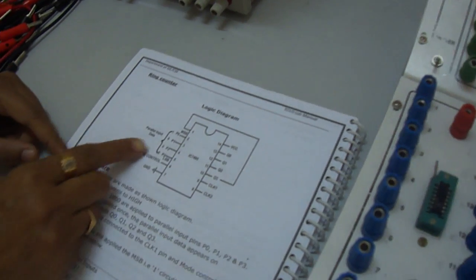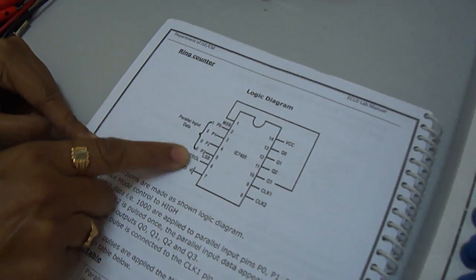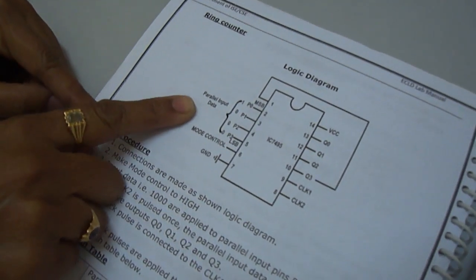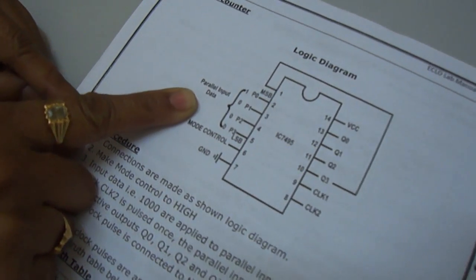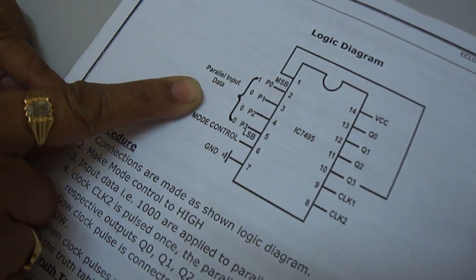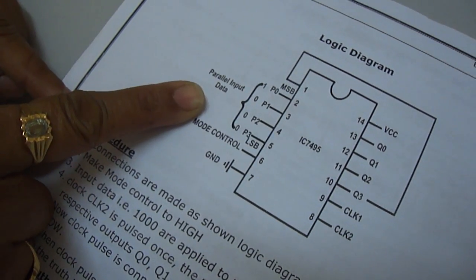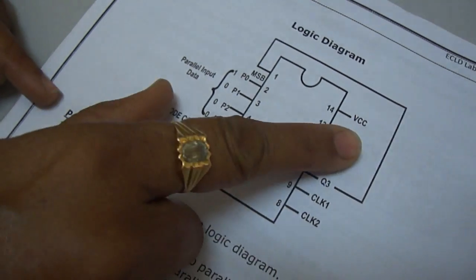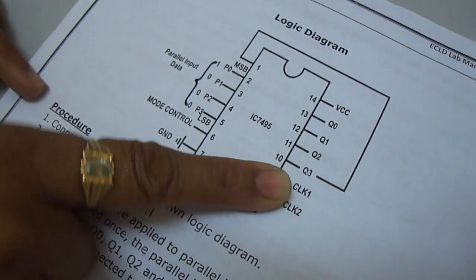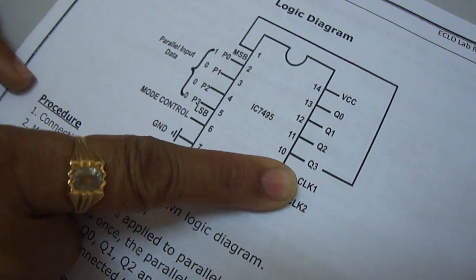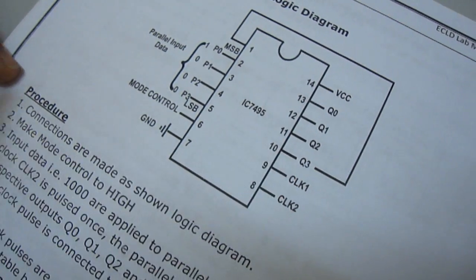In this circuit, P0 to P3 is the parallel input data, and Q0 to Q3 is the serial output data.